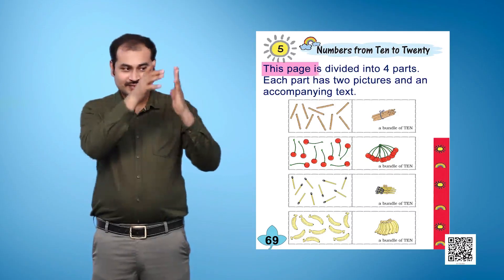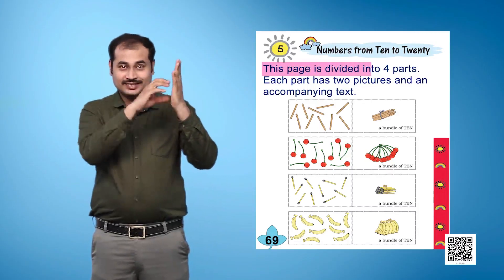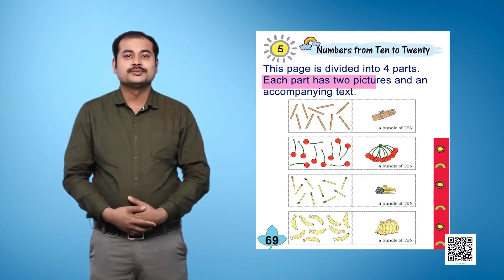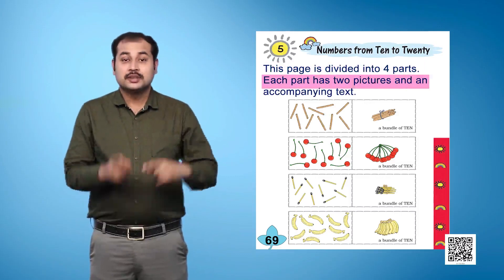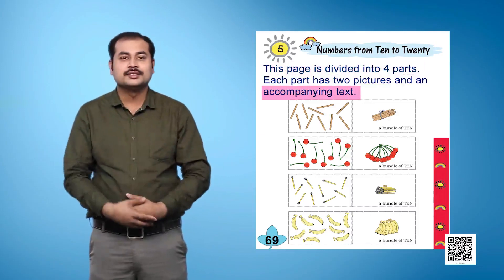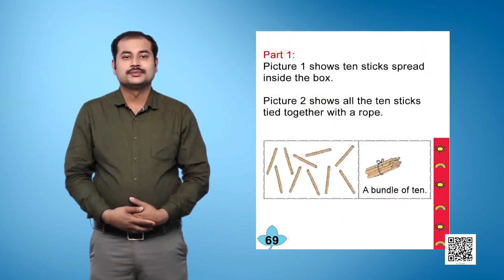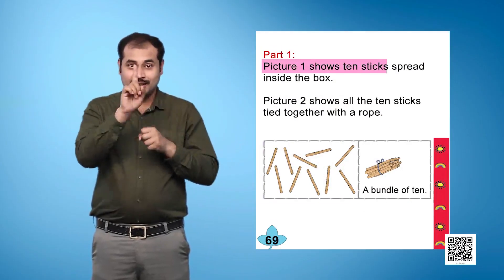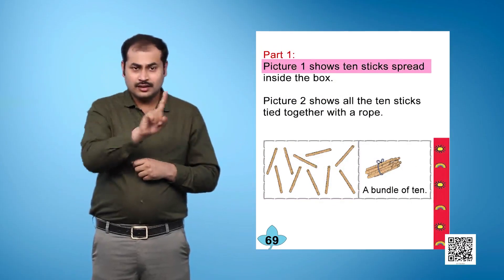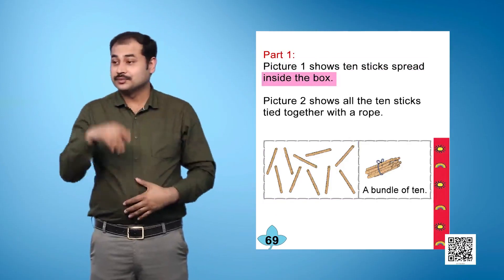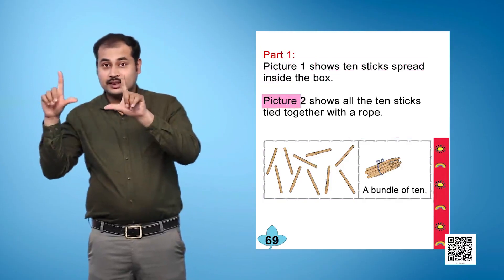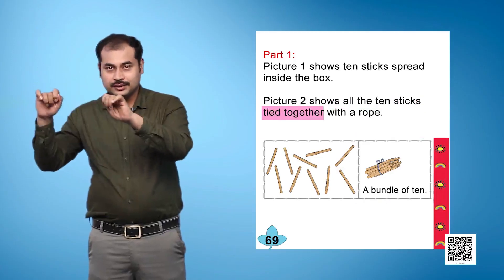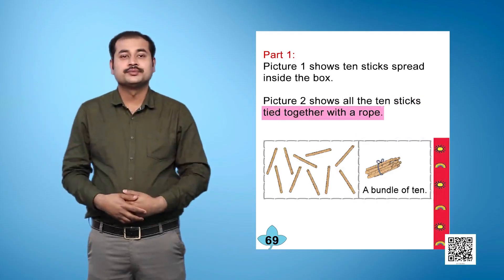This page is divided into four parts. Each part has two pictures and accompanying text. Part 1, Picture 1 shows 10 sticks spread inside the box. Picture 2 shows all the 10 sticks tied together with a rope.